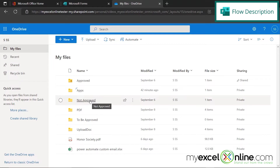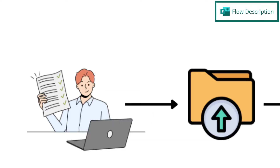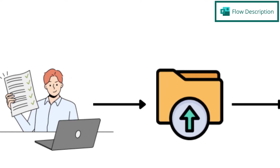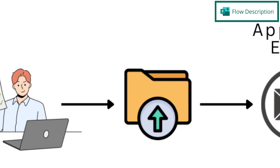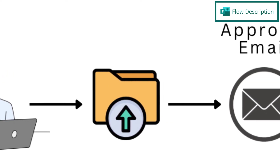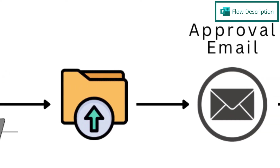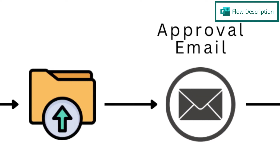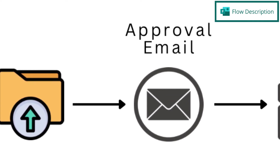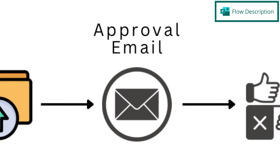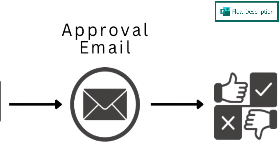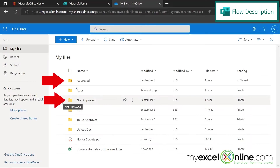So that's going to be an automated task that we are going to do in Power Automate. Let's review the process: a user goes in and fills out a form where they upload a file. An approval email is sent to the point person in your organization. That person either approves the file, which will be moved to the approval folder, or they don't approve the file, which will be moved to the not approved folder. So let's go and create the flow for that.